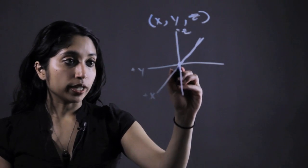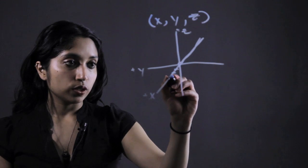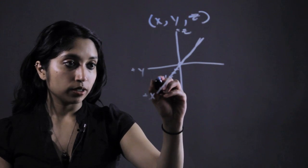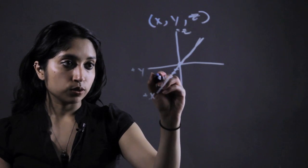So to graph a point, we just go over x units, then go y units from there, and if z is positive, go z units up.